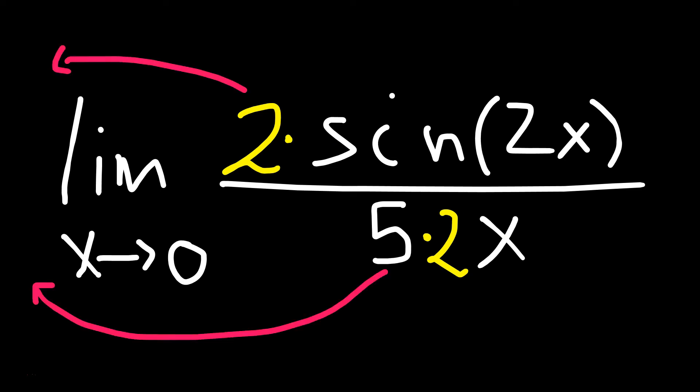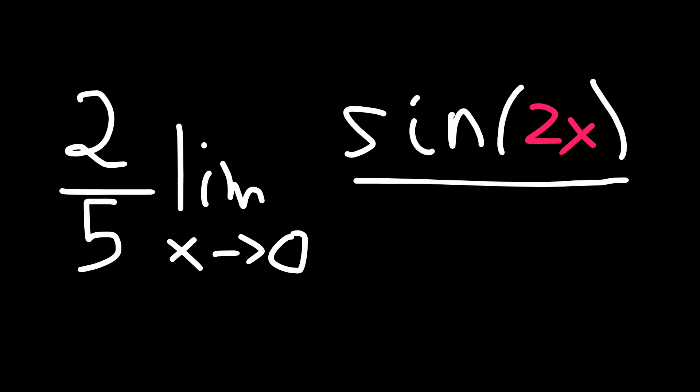Then this 2 can be factored out, and the 5 can also be factored out. So we will have 2 fifths times the limit as x approaches 0 of sine of 2x over 2x. And notice 2x parts are the same now.